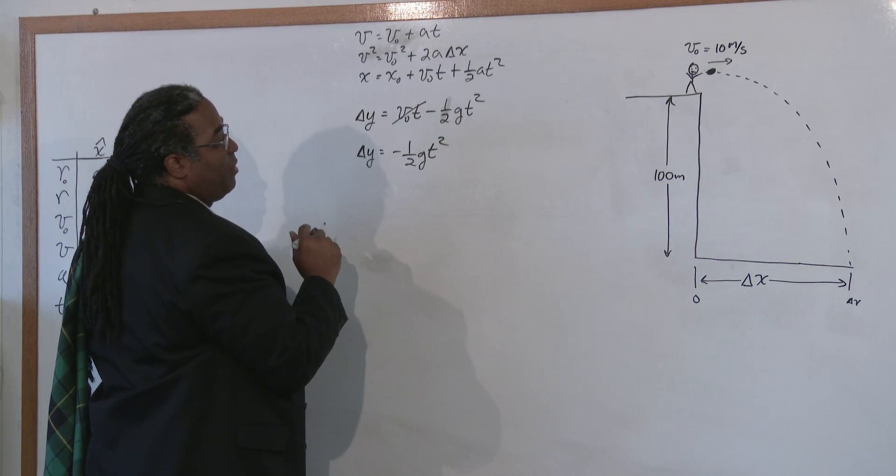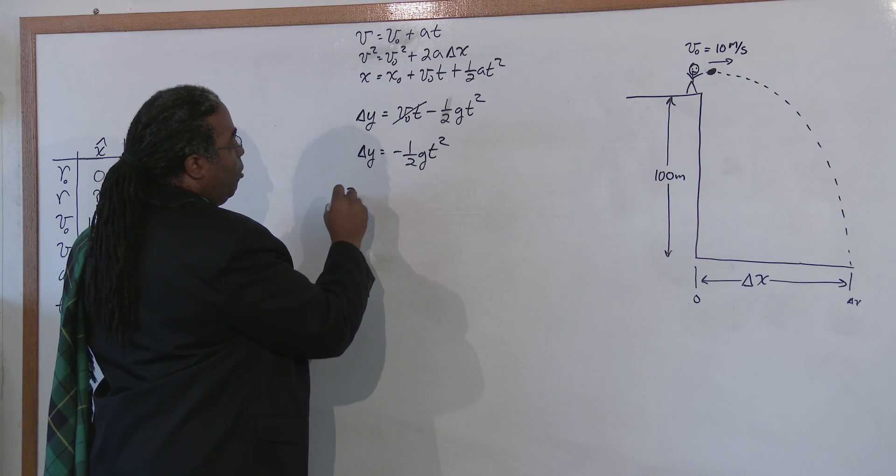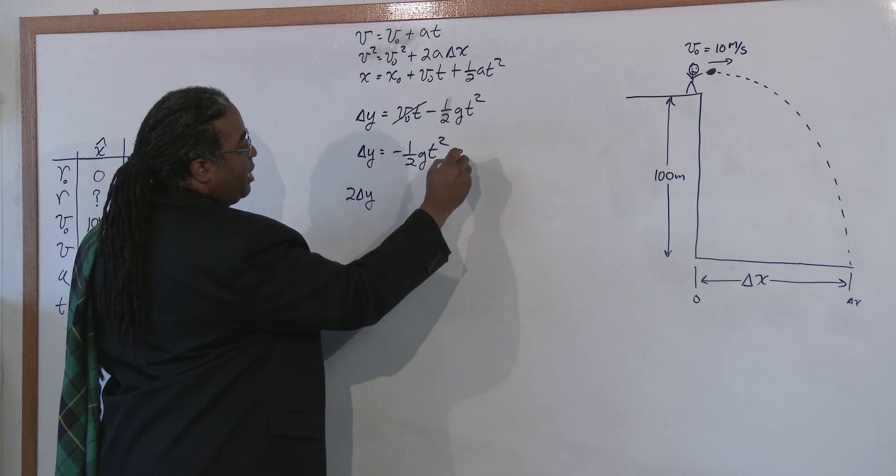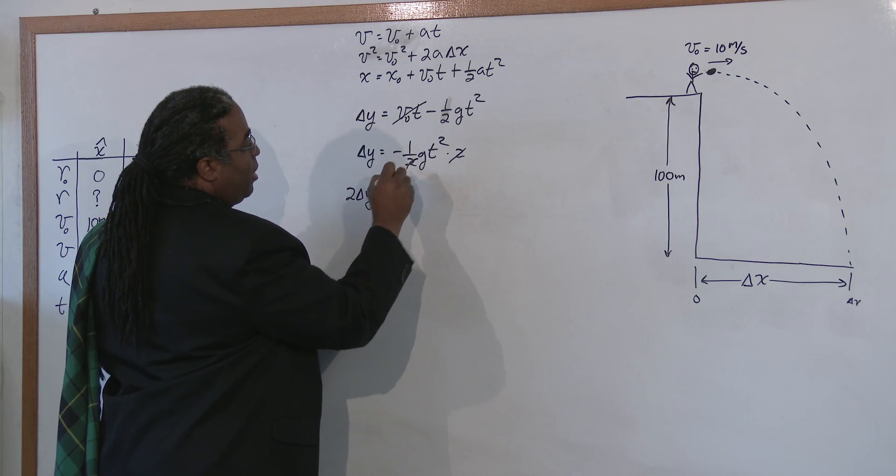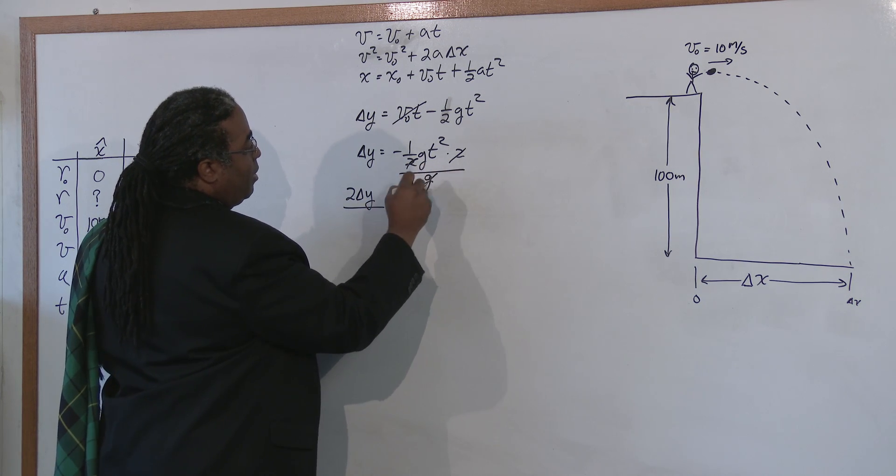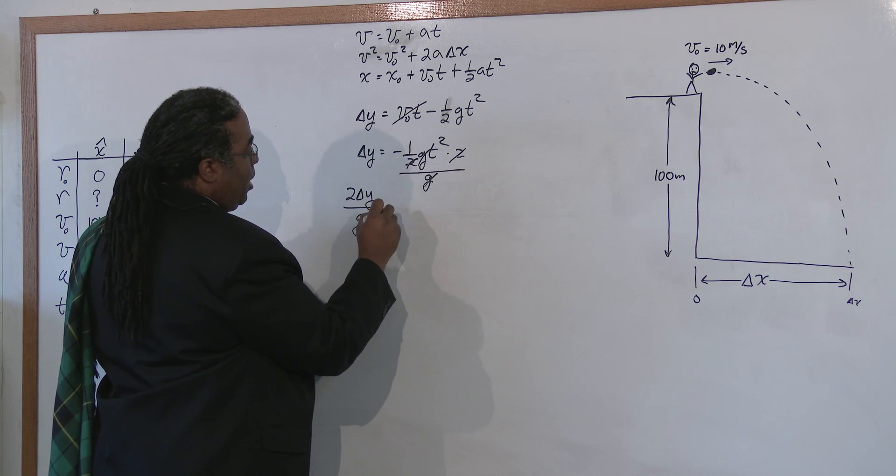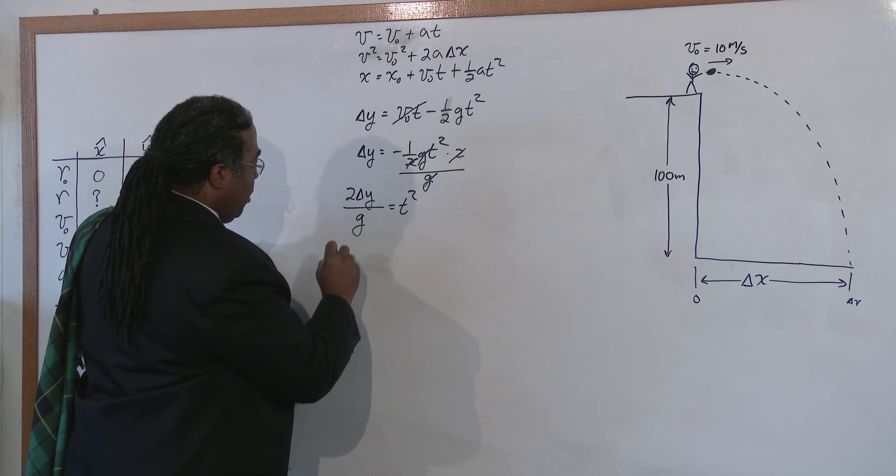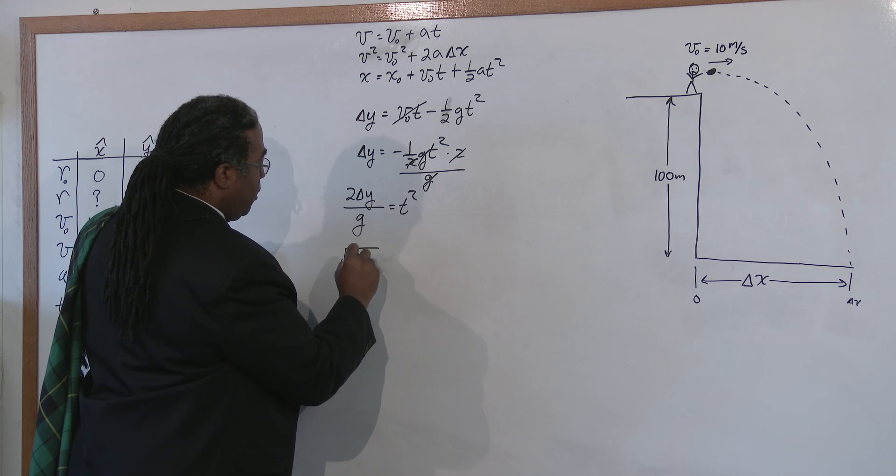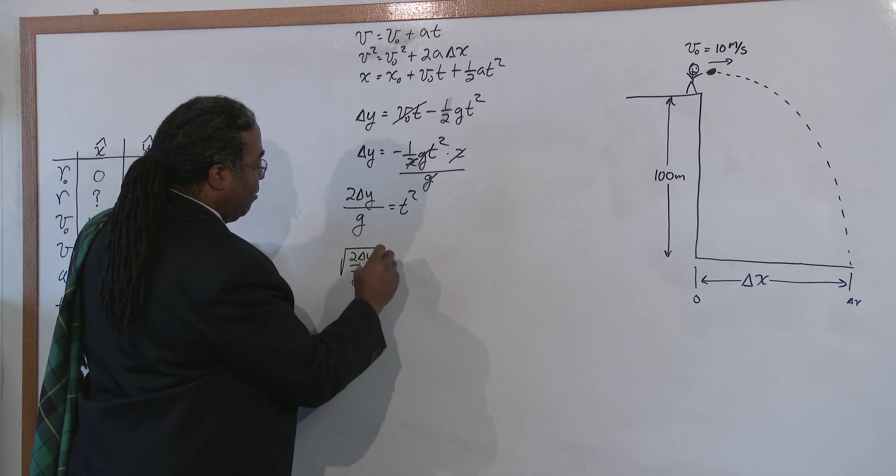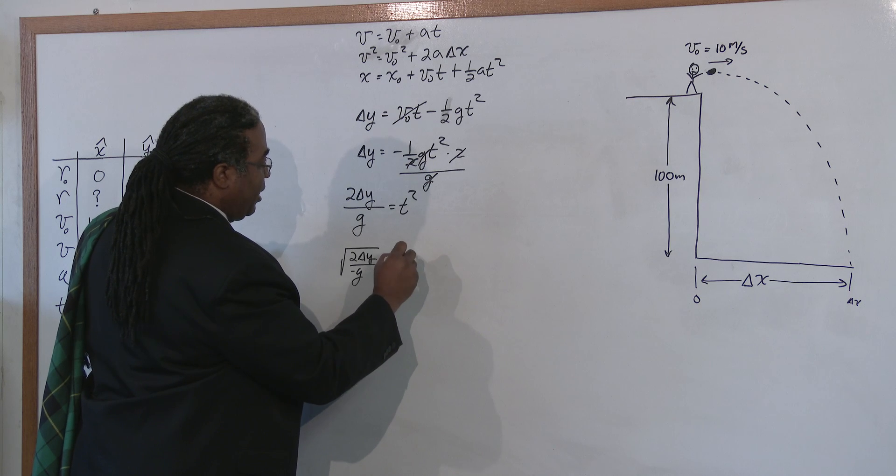So we're looking for the time so we solve for t. We bring the 2 over by multiplying both sides by 2. And then we bring the g over by dividing both sides by g. So you're left with t squared. So therefore, the square root of 2y over g, and that's a negative g by the way, equals t.